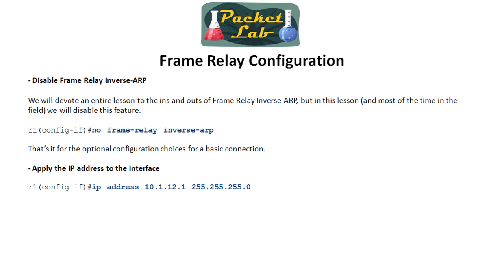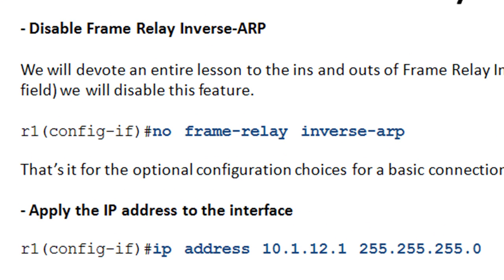The next step is technically optional, but for today's lesson we're going to make it mandatory: disabling Frame Relay Inverse ARP. We won't go into a lot of detail here — there will be a future lesson covering this inside and out. Basically, Inverse ARP provides a dynamic mapping of Layer 3 addresses to the Layer 2 DLCI address. We don't want that — we're going to do a manual mapping instead. The command is: no frame-relay inverse-arp.